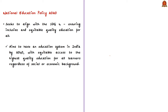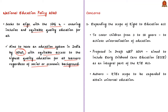The syllabus relevant to the analysis of this news article is highlighted here for your reference. The policy seeks to align itself with Sustainable Development Goal number four of ensuring inclusive and equitable quality education for all, and aims to transform the present education system based on the new education policy by 2040 with equitable access to the highest quality education for all learners regardless of their social or economic background. We are going to discuss some of the important concerns raised by the authors of this article.